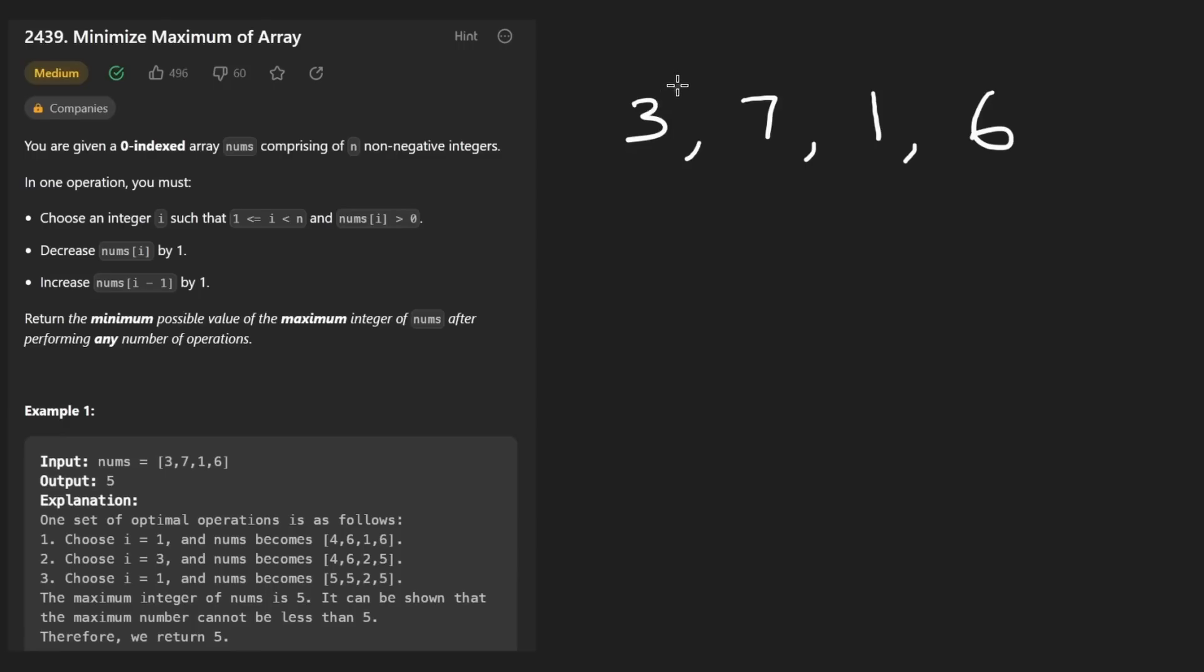Now, since we can't decrement this, the reason we can't decrement this is because where would the value go? If we say this is two, now that one is kind of lost. That's not something we're allowed to do.